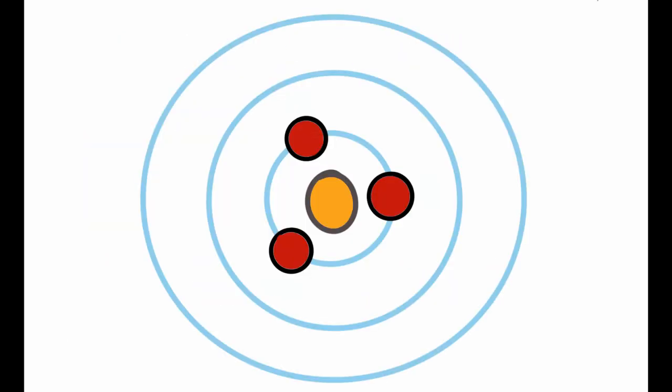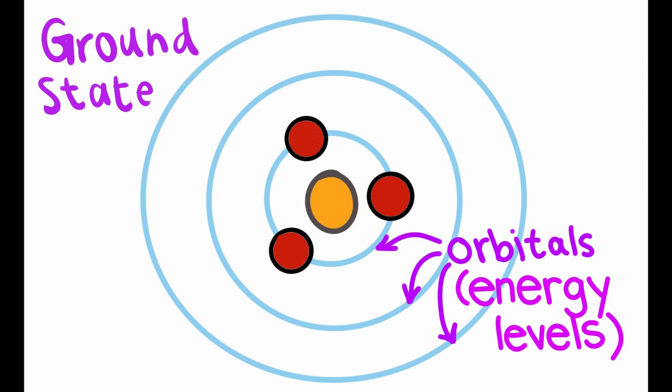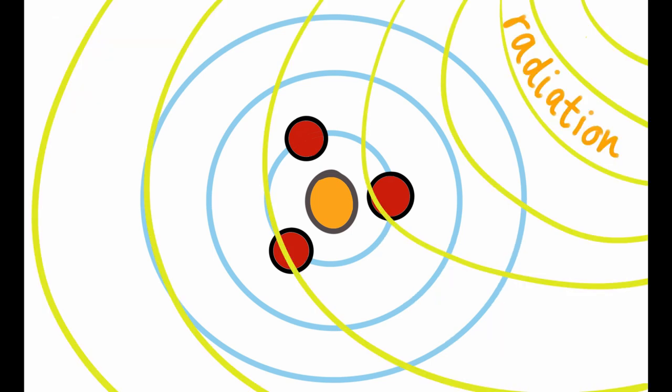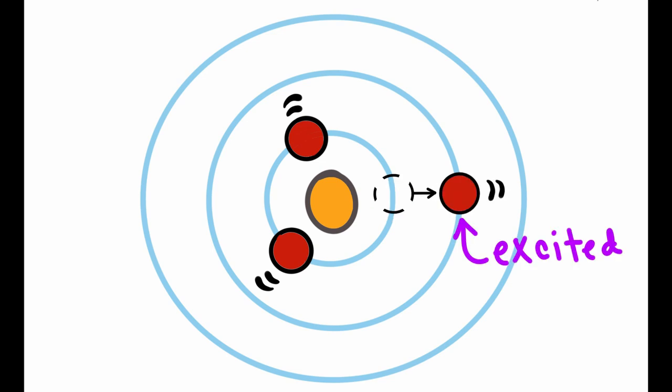Atoms also have energy states. Atoms in the lowest energy state have electrons in the ground state. When radiation hits atoms, the electrons become excited and jump energy levels.